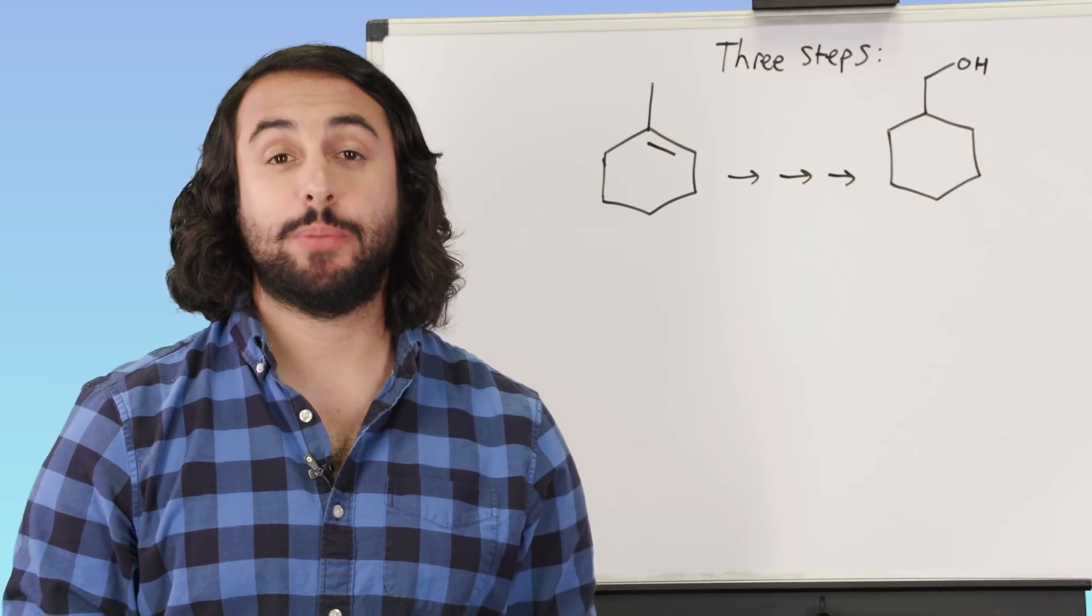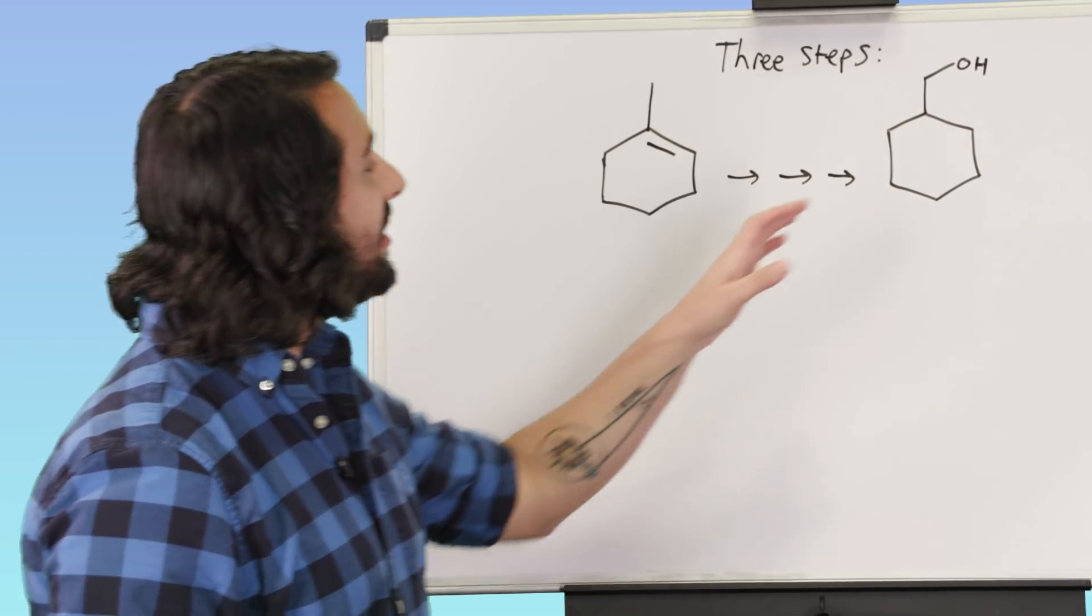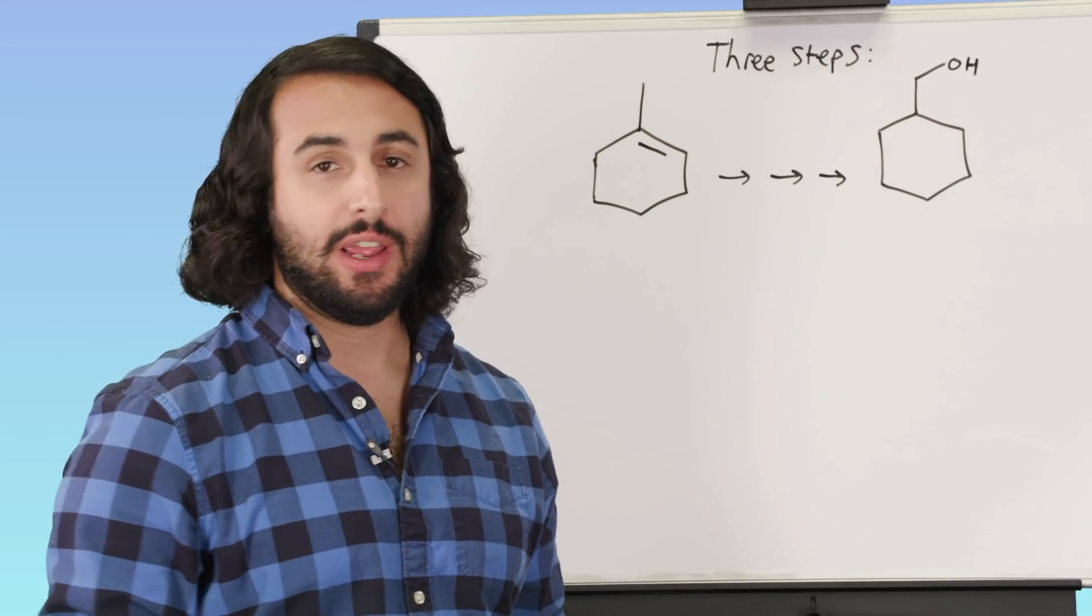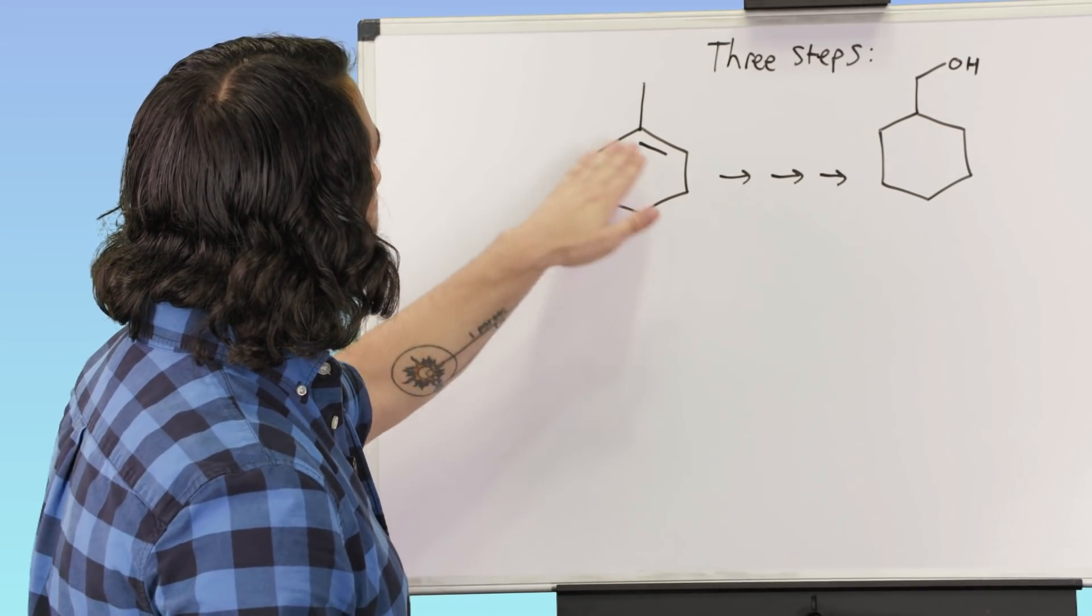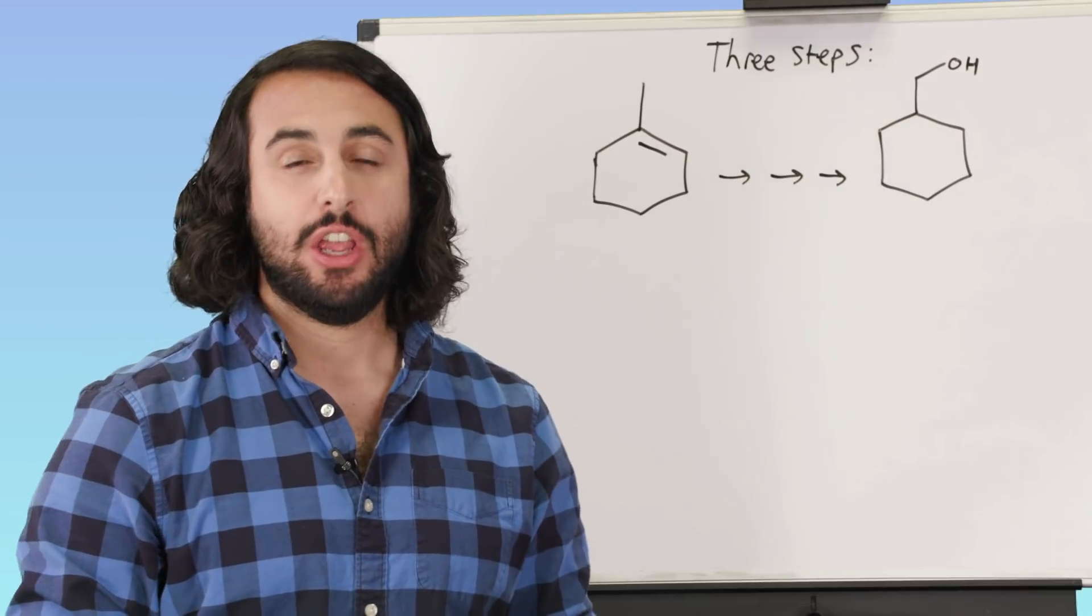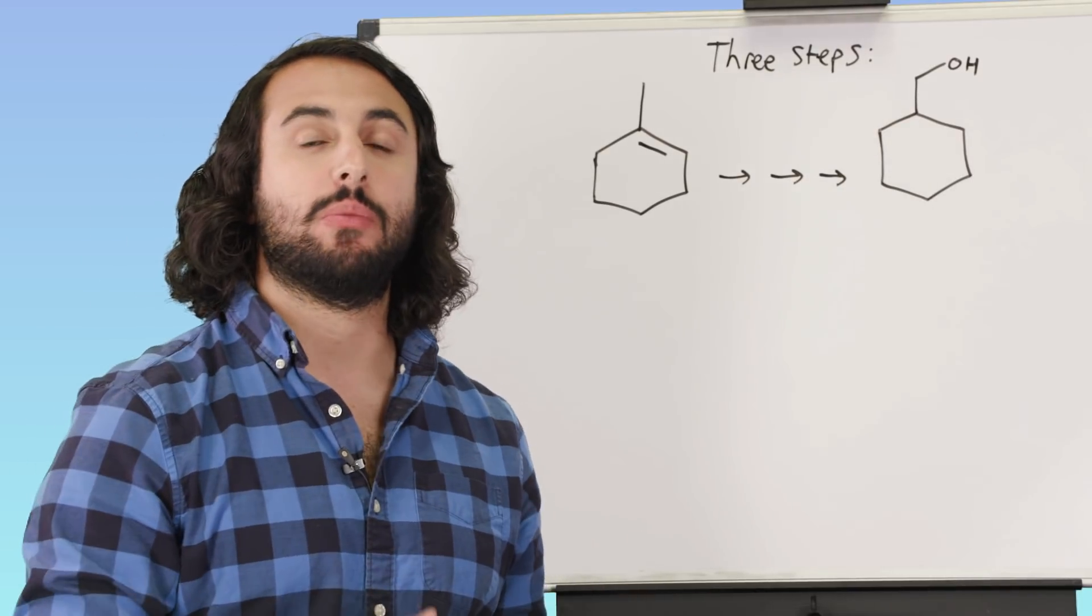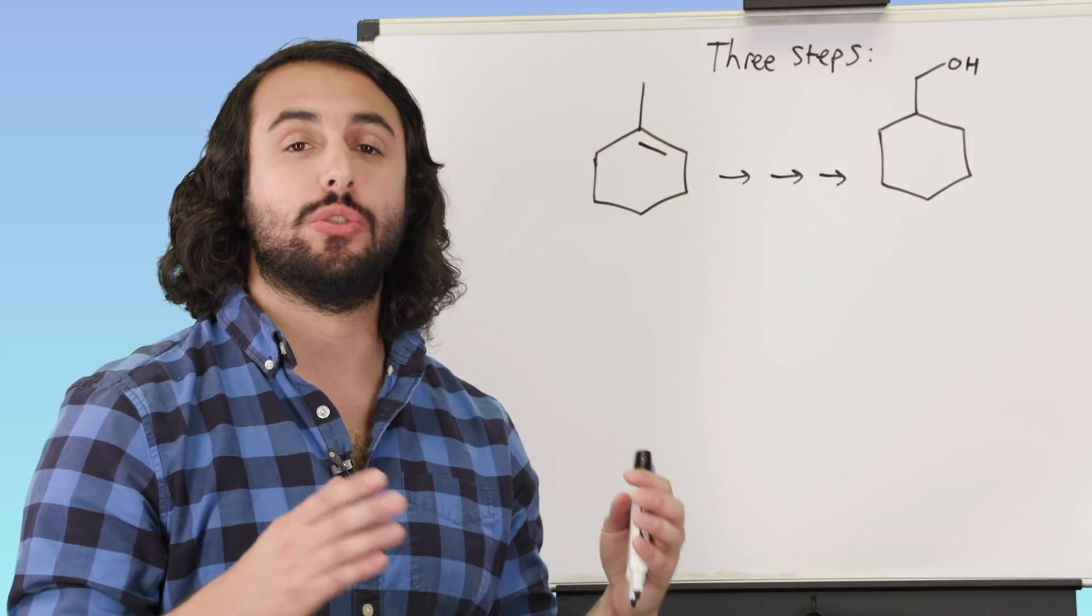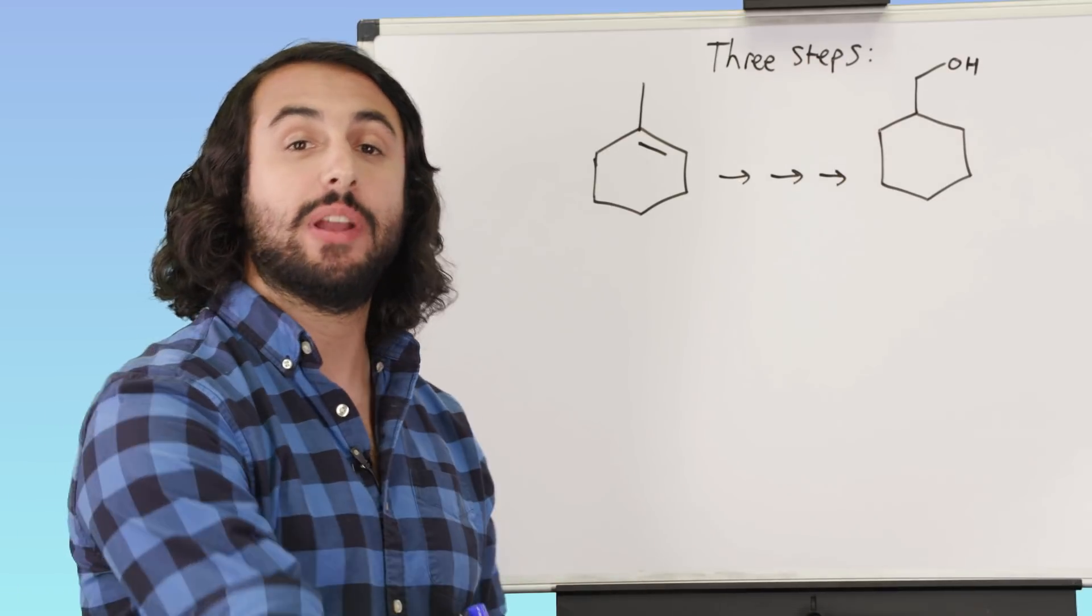So let's see if we can put this puzzle together. Take a look at the desired product. We see that we're trying to get an alcohol here, and we're starting out with some alkene functionality. So we're probably thinking that we're working with addition reactions, maybe elimination reactions. We're trying to add things to pi bonds, maybe generate new pi bonds.